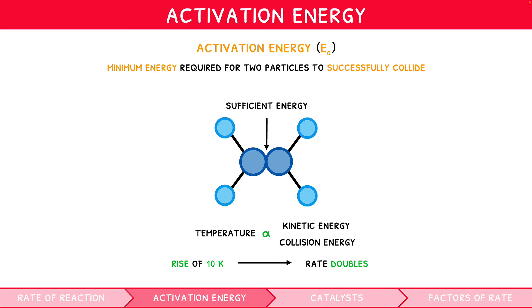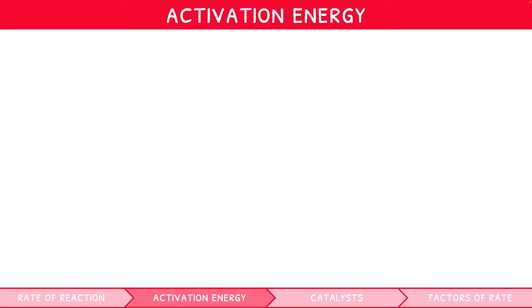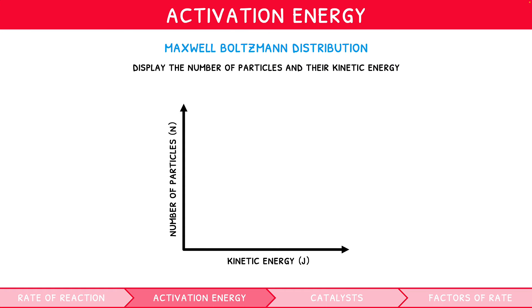These concepts are often visually represented using what is known as the Maxwell-Boltzmann distribution. This graph displays the number of particles and their kinetic energy at separate temperatures, indicated by distinct lines. The peak of each line represents the most likely kinetic energy of the particles at that temperature. In addition, activation energy is represented using a vertical dotted line. Practice drawing this graph. You can be asked to in the exam.